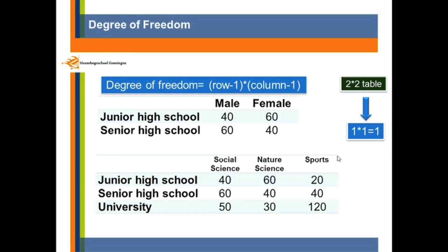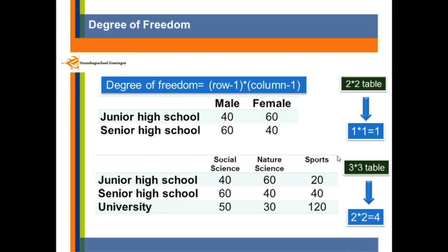Suppose we have this table. Now it is a 3 by 3 table, because we have 3 rows and 3 columns. So the degree of freedom comes from 2 times 2, that will be 4.